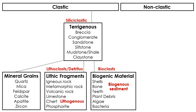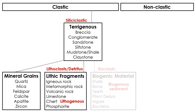Although they sometimes contain biogenous and hydrogenous sediment, terrigenous rocks mainly consist of lithic fragments of igneous, metamorphic, and other sedimentary rocks. So they are clastic rocks.